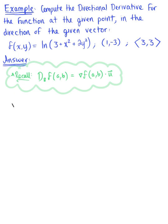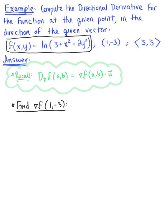To get started, we need the gradient vector. We want to find the gradient of this given function f at the ordered pair (1, -3). We are given the function f(x, y) defined as the natural logarithm of 3 plus x squared plus 2y squared. Using this to find the partial derivatives: the partial derivative with respect to x, since we are differentiating with respect to x, we treat y like a constant, giving us 2x all divided by 3 plus x squared plus 2y squared.